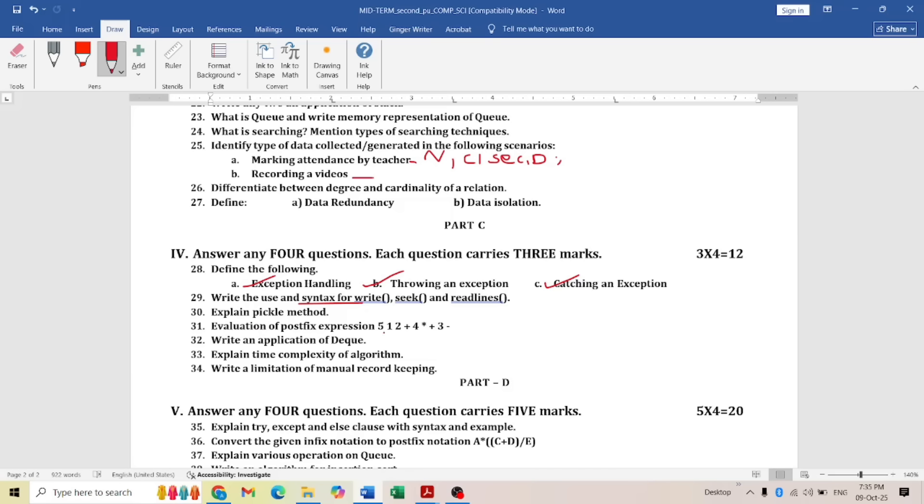Next: explain pickle method. Pickle method you have to explain. Evaluation of postfix expression: you have to use the stack and/or table format to solve it. All this I have posted in the link. Write an application of deque—you have to mention three applications. Explain the time complexity of an algorithm: linear, constant—all this you have to mention. Next: write a limitation of manual record keeping. Three points you have to mention.